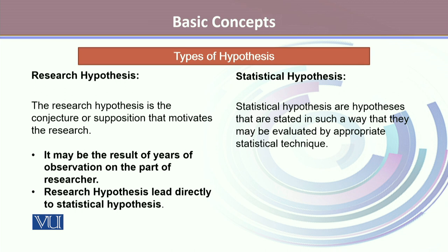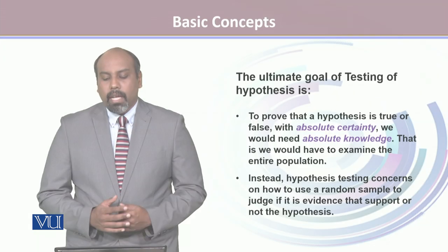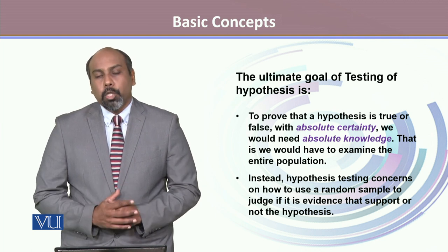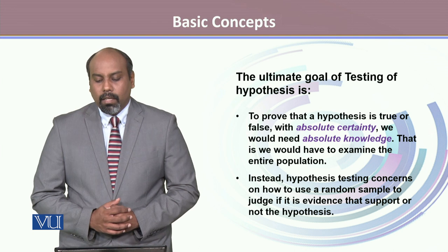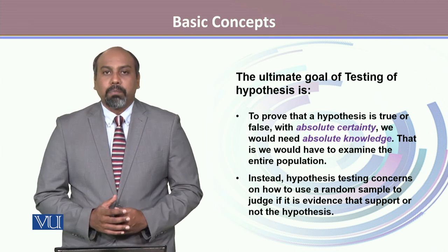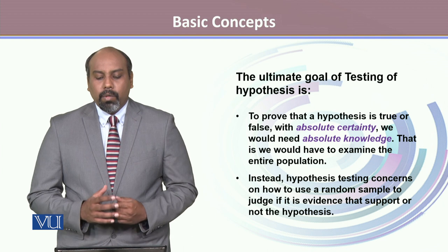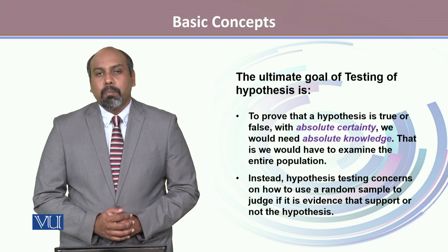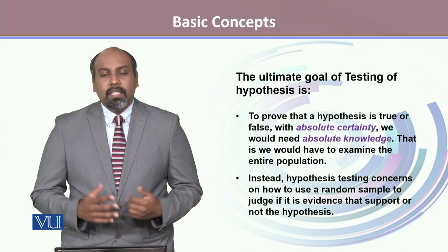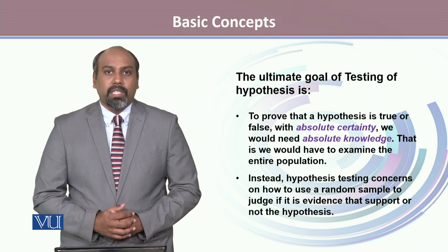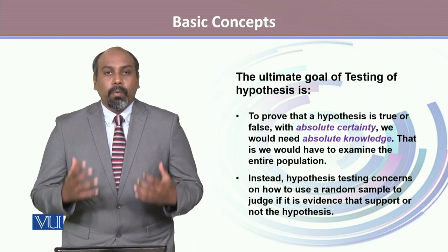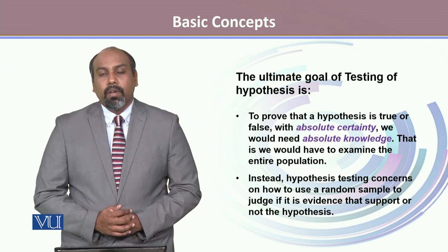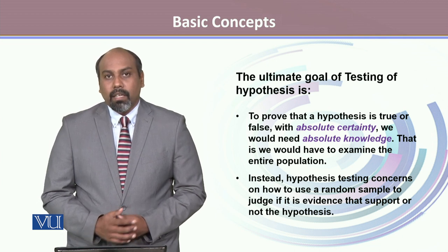The ultimate goal of testing of hypothesis is to prove that the hypothesis is true or false. But this should be done with absolute certainty, which would require absolute knowledge — that is, we would have to examine the entire population. But practically, we cannot study the entire population in most cases. In such situations, we rely on the information that comes from the sample, and when we generalize our results to the population, that is what we perform in testing of hypothesis.